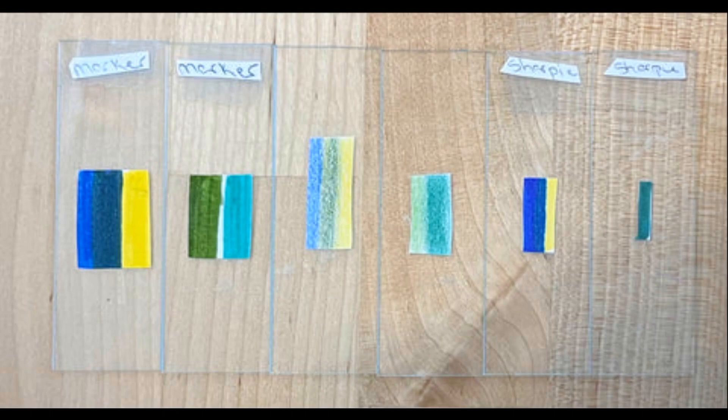To demonstrate this phenomenon, let's compare manufactured green pigment with handmade green pigment created from a combination of yellow and blue and study them under a Foldscope.